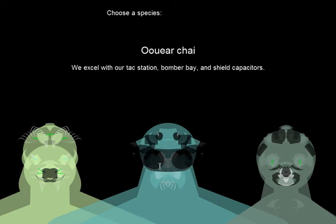Each has specialties, in this case attack station, bomber bay, and shield capacitors. That is about what their starting ship technologies are. We'll pick these war-risk goggle guys, the war-chai.